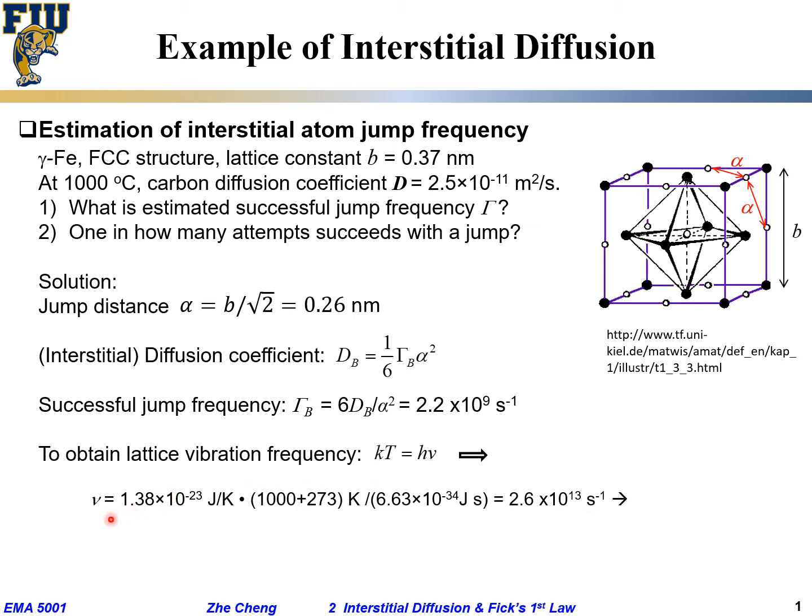So now you have the vibration frequency, you have the successful jump frequency. You have the successful jump frequency, you have the vibration frequency. To understand how many attempts are successful, you just divide the successful jump frequency by the vibration frequency. You get a very small number, 10 to the power of negative 4. What does this mean?